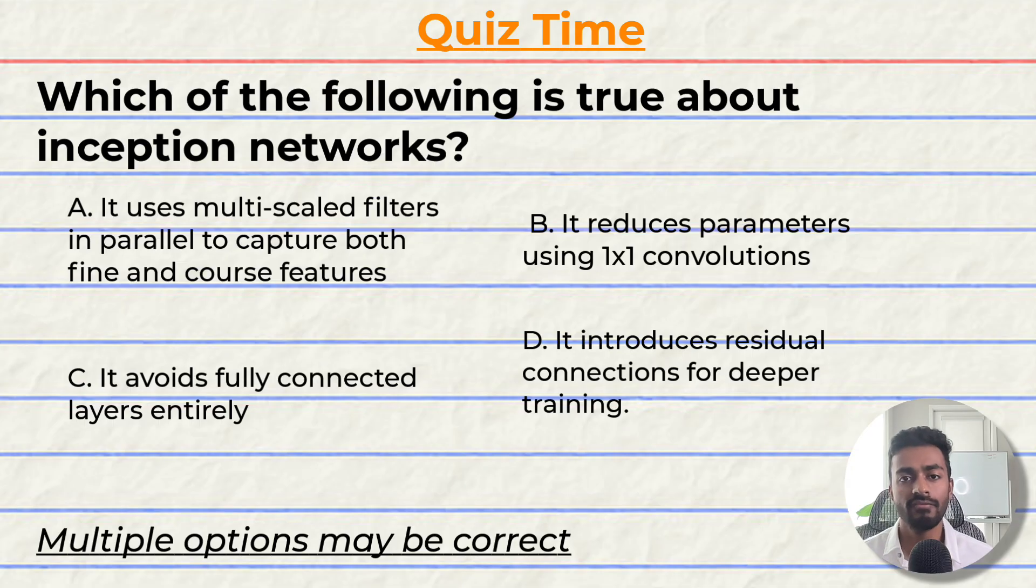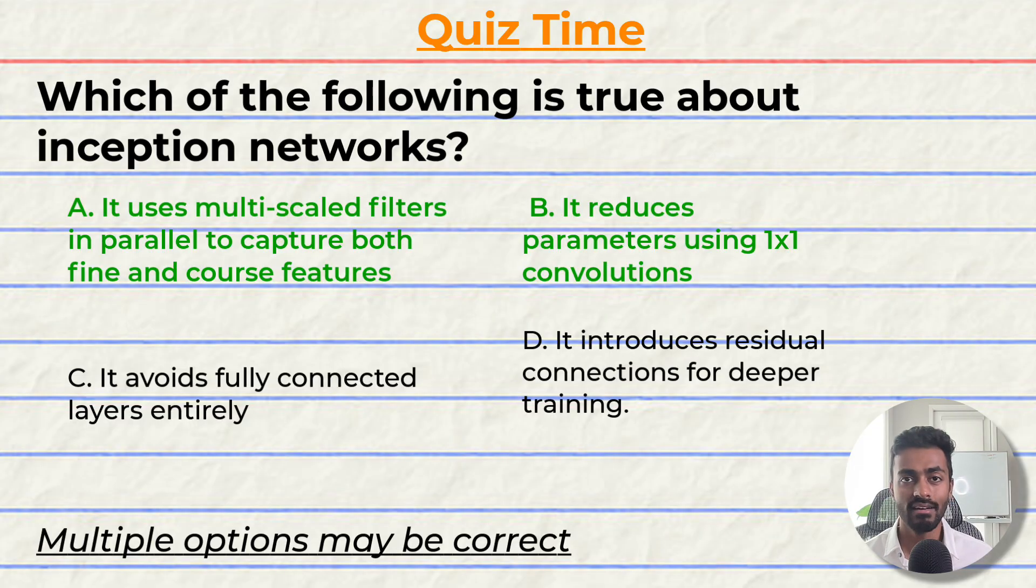Quiz time. Have you been paying attention? Which of the following is true about inception networks? A, it uses multi-scale filters in parallel to capture both fine and coarse features. B, it reduces parameters by using 1x1 convolutions. C, it avoids fully connected layers entirely. Or D, it introduces residual connections for deeper training. I'll give you a few seconds to answer this question. The correct options are A and B. Did you get them right? Please comment your reasoning down in the comments below and let's have a discussion.